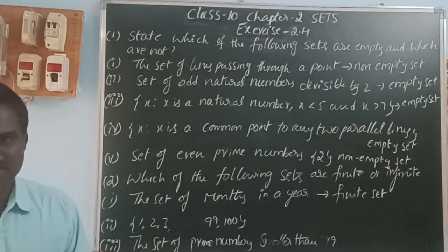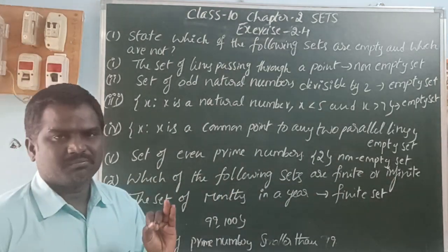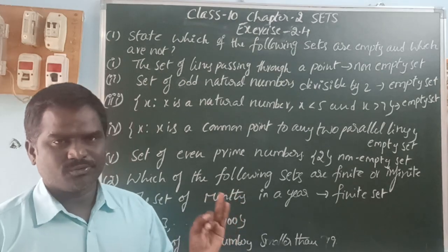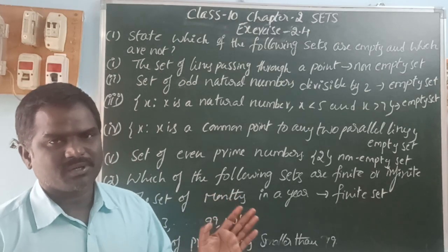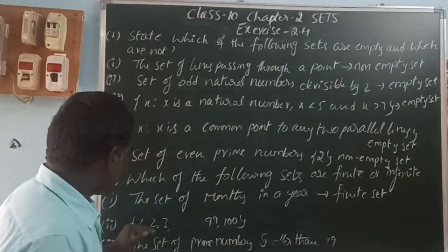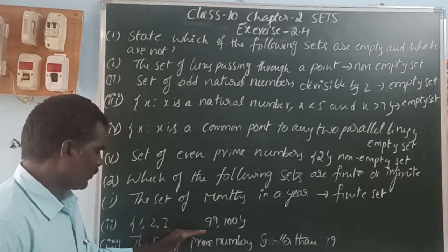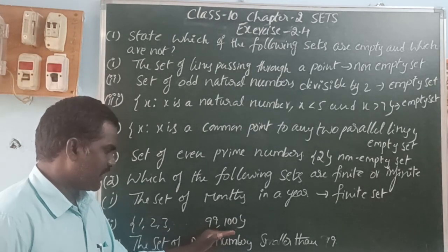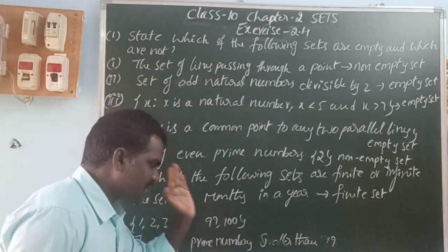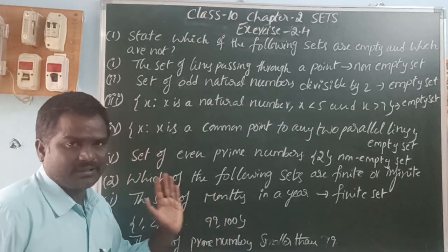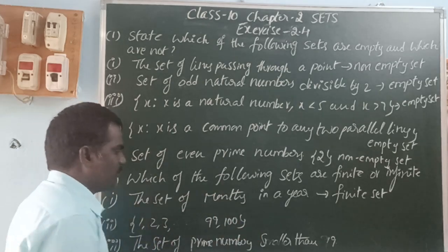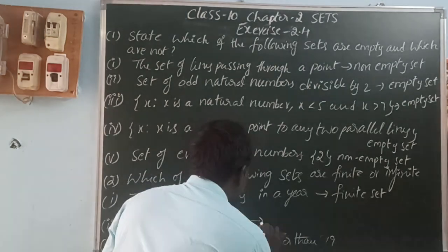The twelve months are: January, February, March, April, May, June, July, August, September, October, November, December. Next, the set of numbers 1, 2, 3, 4, 5, 6, and so on up to 99 and 100. In this set there are 100 elements, and these hundred elements are countable, so it is a finite set.